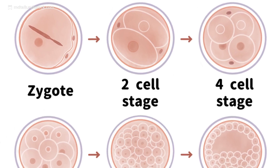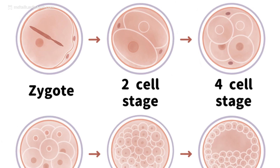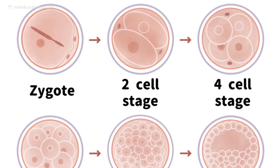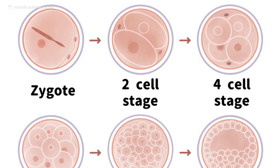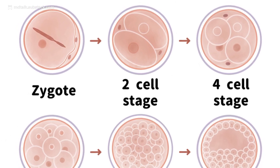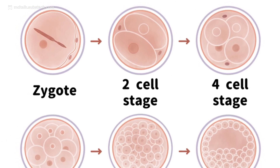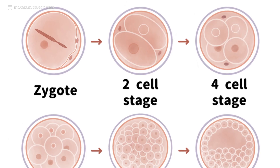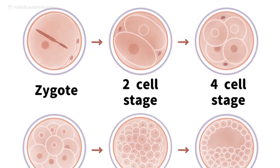Nuclei decondense. Male and female pronuclei migrate, align, and fuse. A diploid zygote is formed. Life at the cellular level begins.